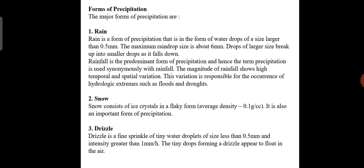The next form of precipitation is snow. Snow consists of ice crystals in a flaky form with an average density of 0.1 grams per cubic centimeter. It is also an important form of precipitation.